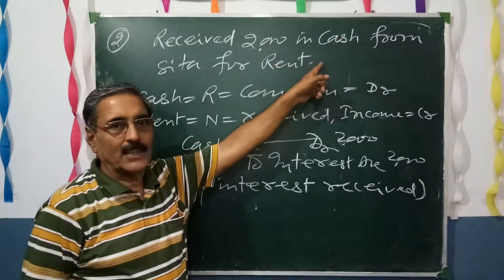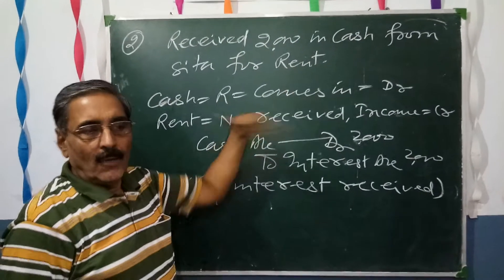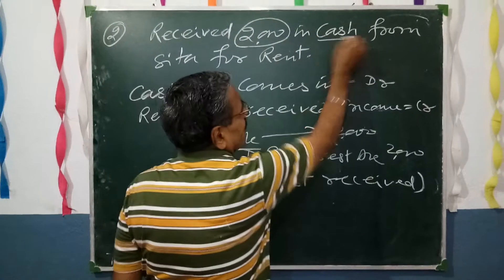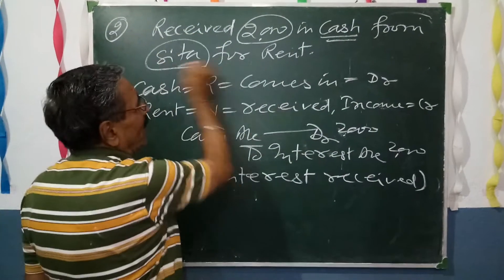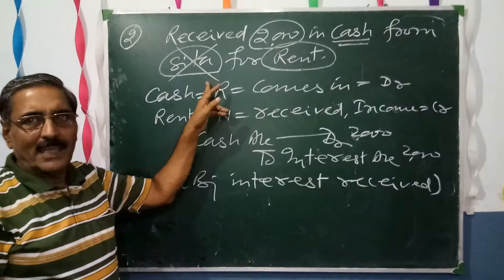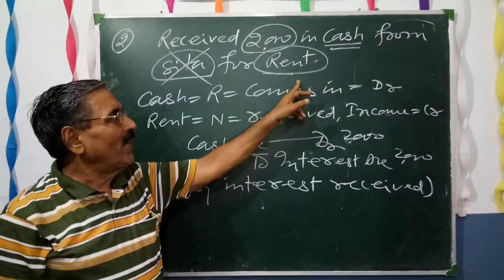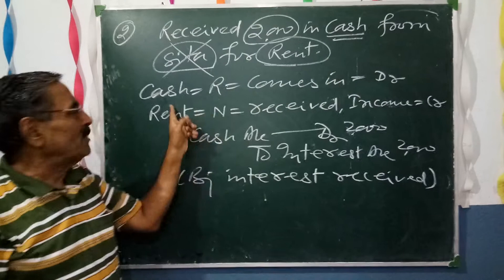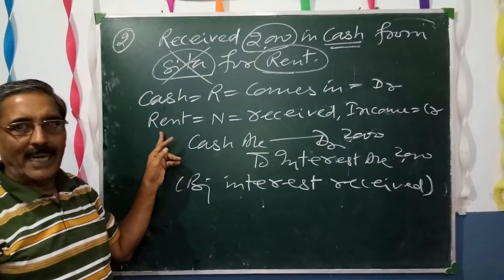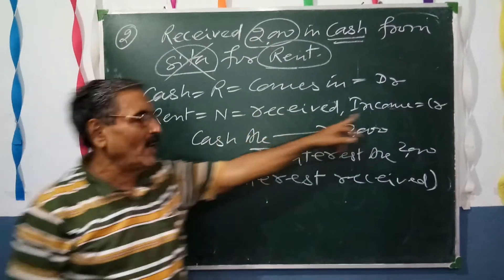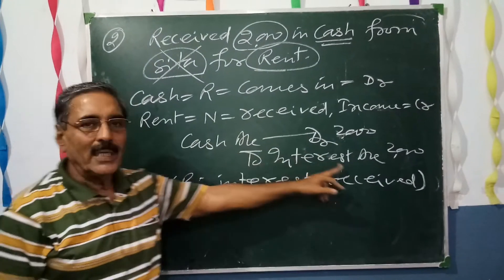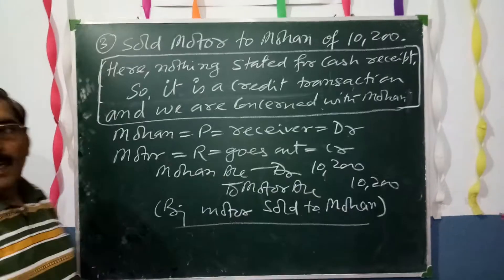Second question: received ₹2000 in cash from Sita for rent. We are concerned with cash and rent. We are not concerned with Sita because we are not taking a loan — we have received rent. Cash belongs to real account; it comes to us, so it will be debited. Rent is a nominal account; we have received it so it is income — income will be credited. Entry: Cash Account debit to Rent Received Account.